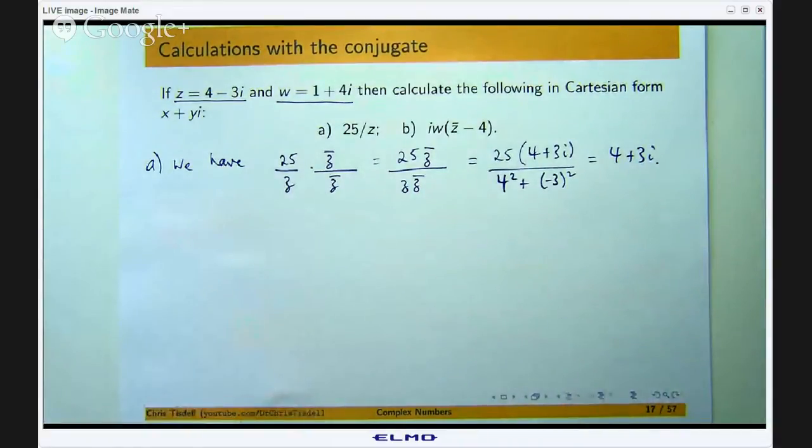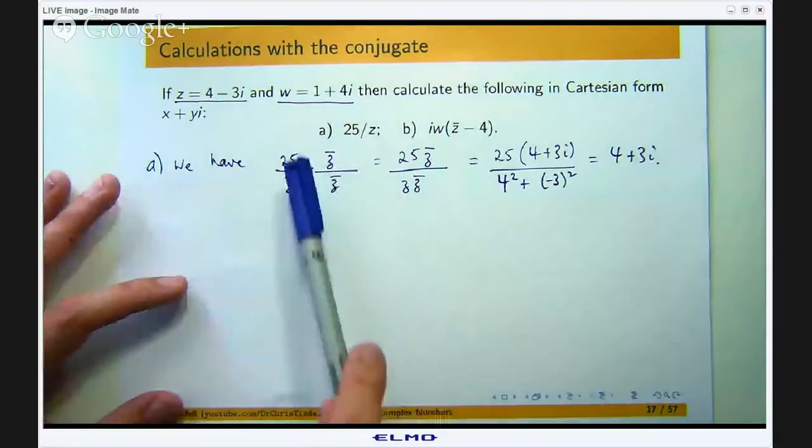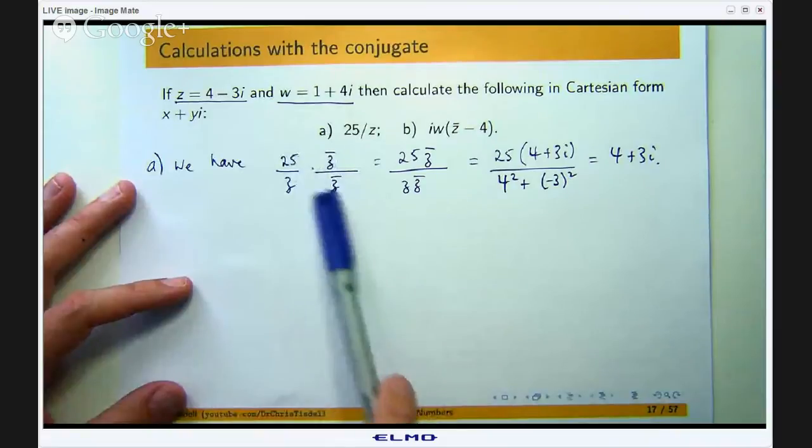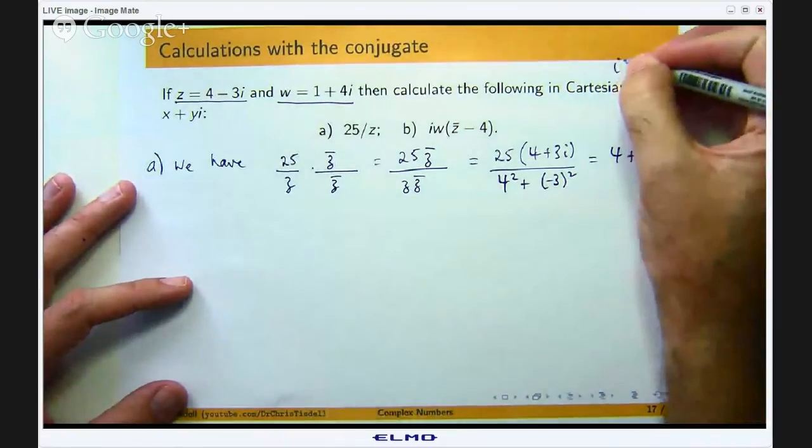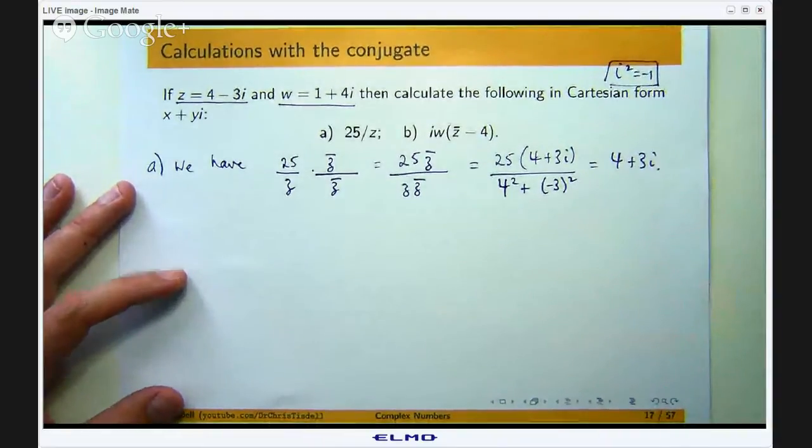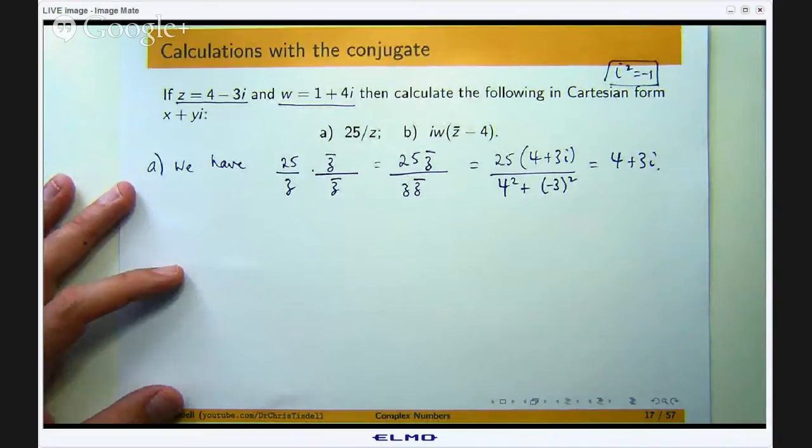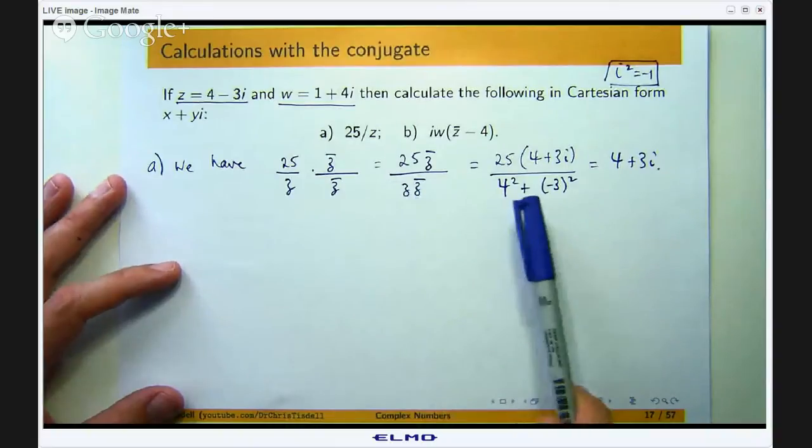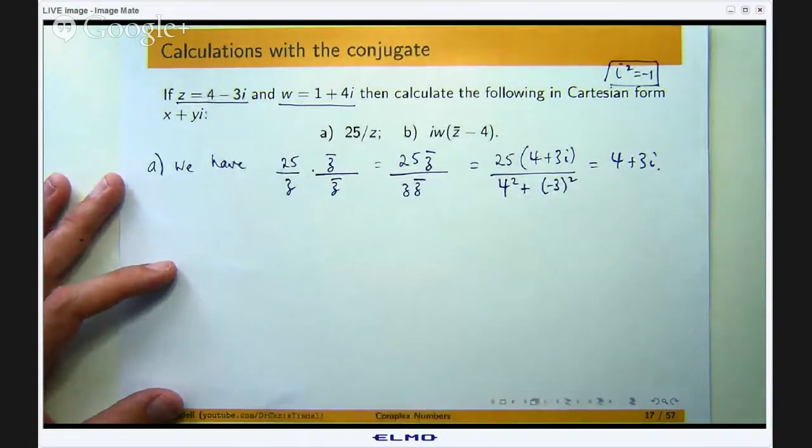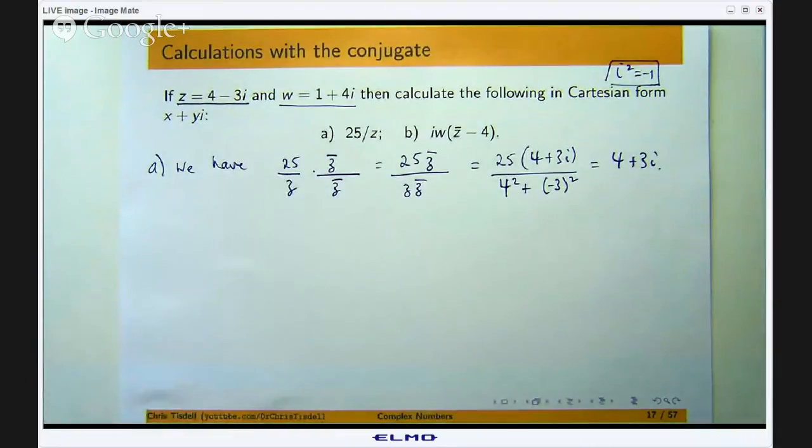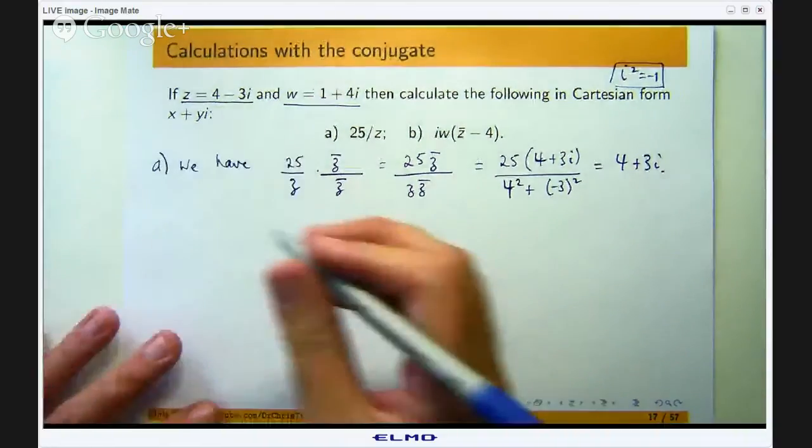Now some people will look at that and go well hang on I prefer to put the 4 minus 3i down there, the 4 plus 3i there, the 4 plus 3i there and then expand it all out and remember that i squared equals negative 1. There is nothing wrong with that, it just takes more time than is needed. So the way that I have got it here, if you know that Z times Z bar is always the sum of the square of the real and imaginary parts of Z then you do not actually have to remember that i squared equals negative 1. So that is a little time saving technique that works for me and I hope it works for you too.